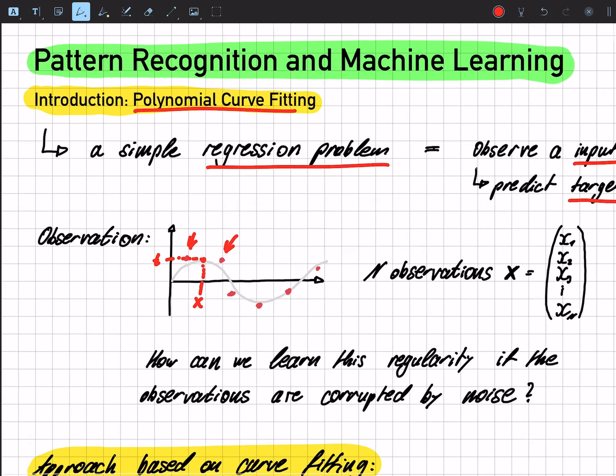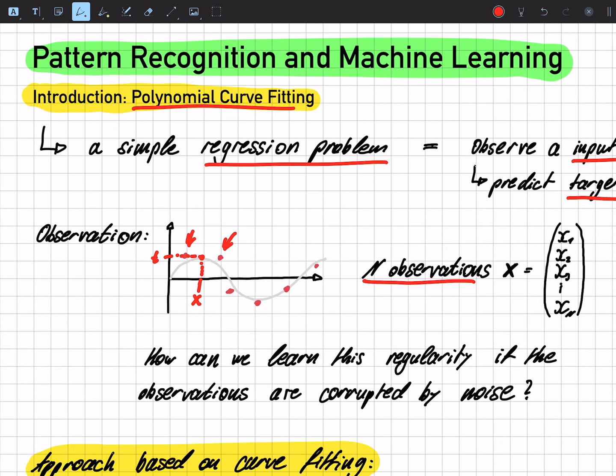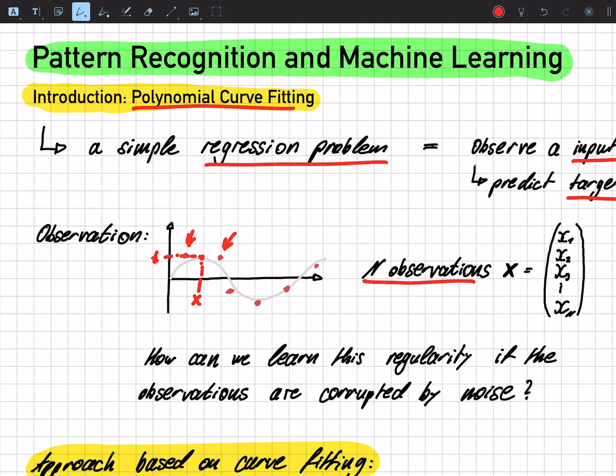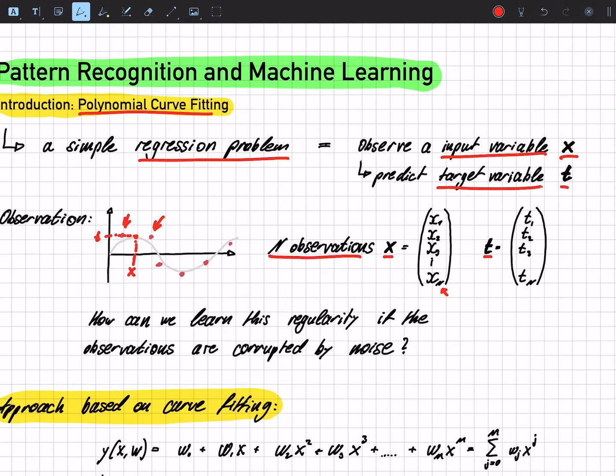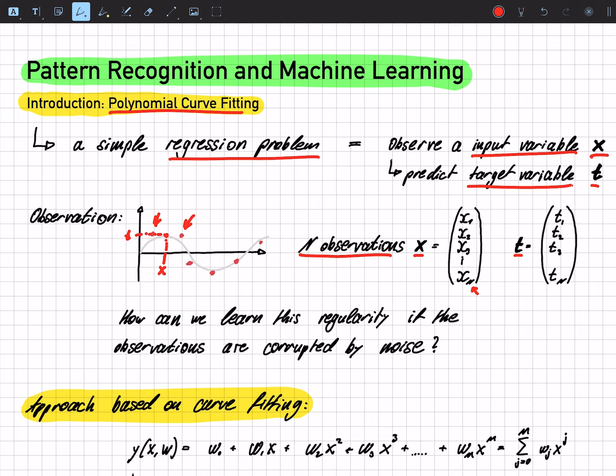We have n observations. These are the red dots that we already have. They are packed in a vector. So if it's thick, we have a vector. And we have the corresponding target variables t. And they go from 1 to n, because we have n observations.